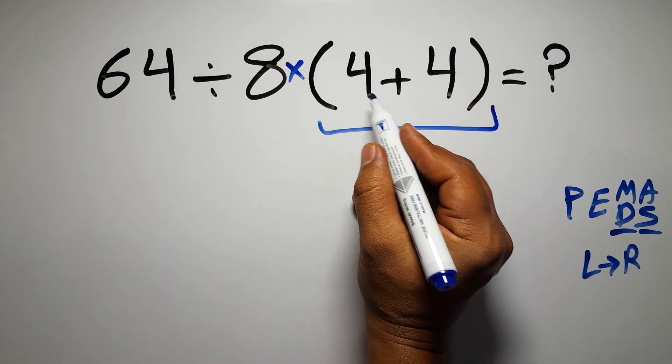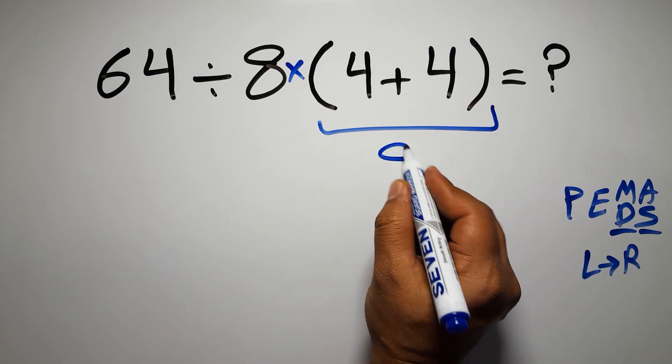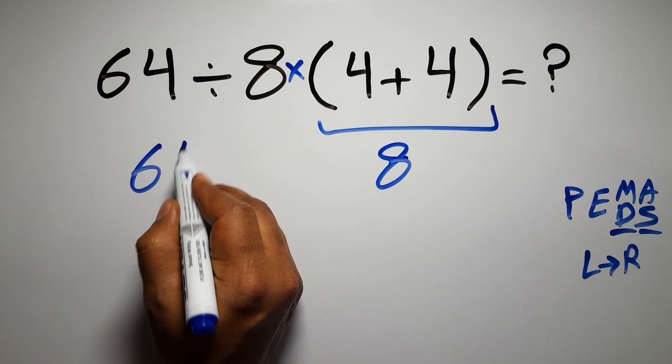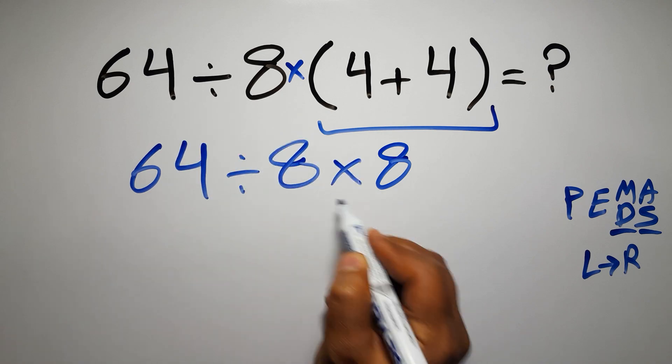So first this parentheses, 4 plus 4 gives us 8, so we have 64 divided by 8, then times 8.